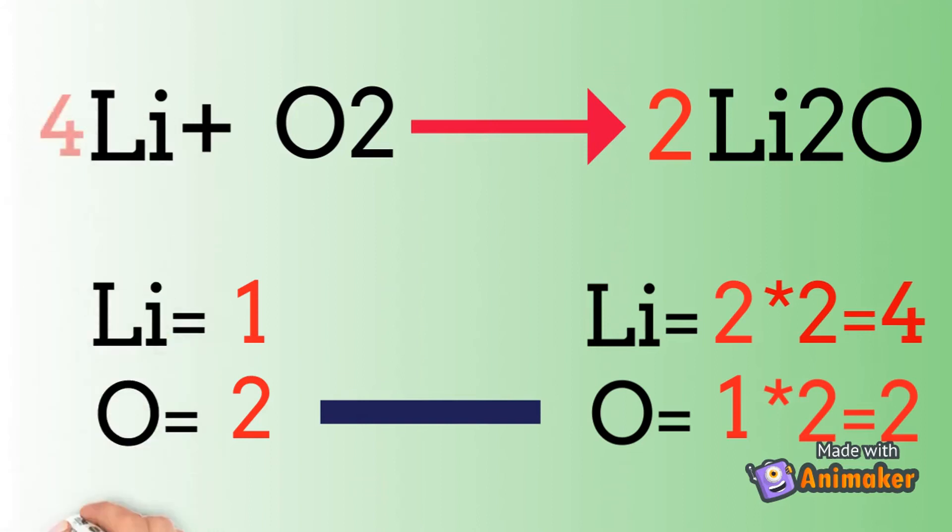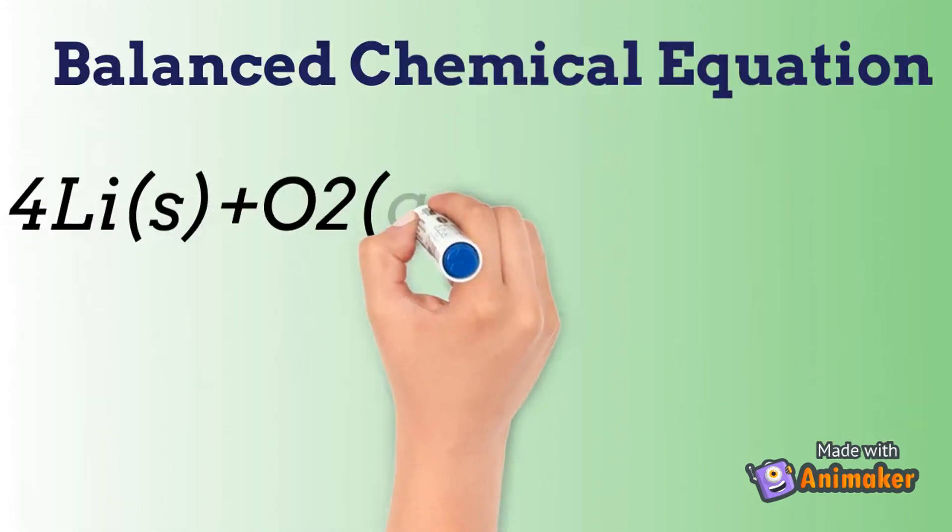We can put a coefficient of 4 in front of the Li. So 1 times 4 that equals 4. And everything is the same. This is the balanced chemical equation.